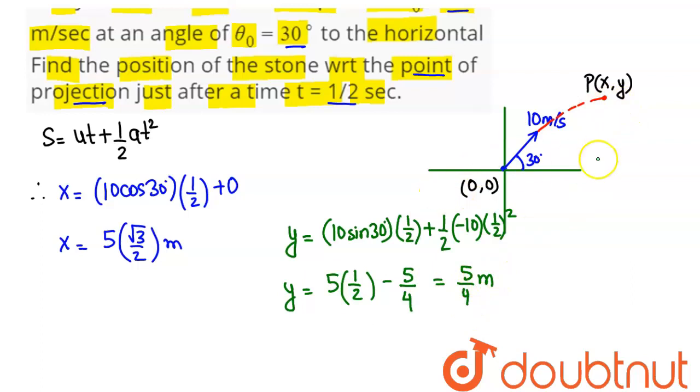So the final position of this particle coordinates will be 5 root 3 upon 2 comma 5 upon 4. This is the position of the stone with respect to point of projection.